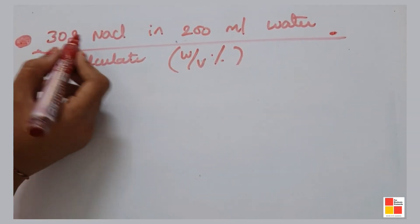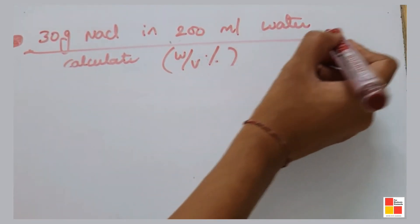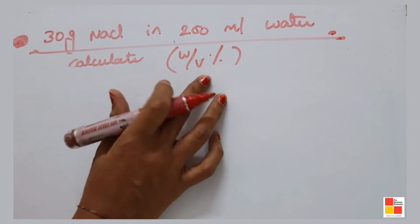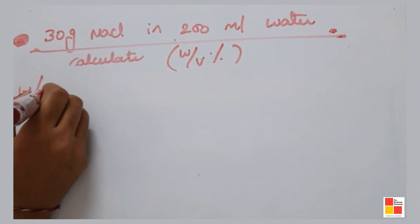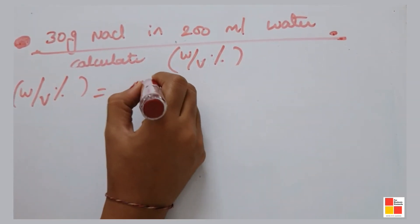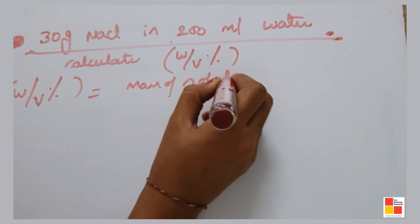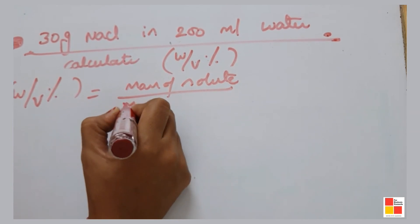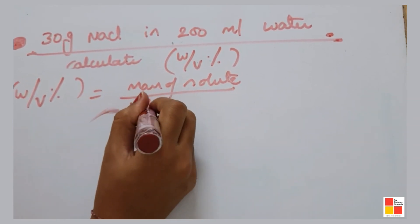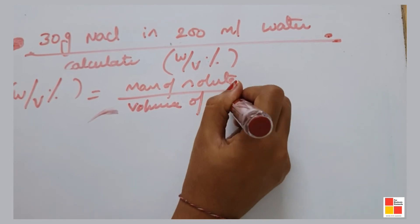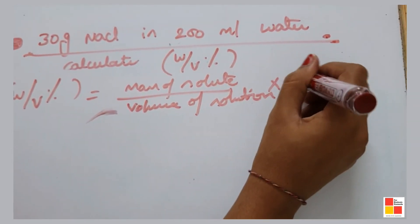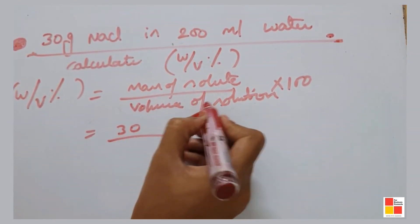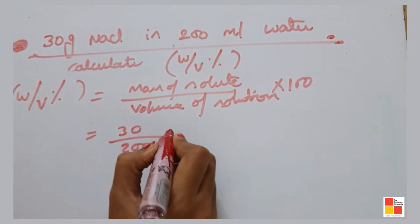Next example: 30 grams of NaCl in 200 ml of water — calculate weight by volume percent. Weight by volume percent equals mass of solute divided by volume of solution, into 100. Mass of solute is 30 grams, volume of solution is 200 ml.